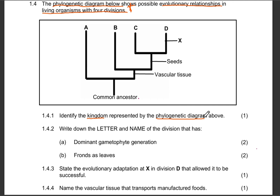The five kingdoms are: Kingdom Animalia, Kingdom Plantae, Kingdom Monera, Kingdom Fungi and Kingdom Protista. From those five kingdoms, which one is represented by the phylogenetic diagram above? It's obviously Kingdom Plantae — that's the kingdom of all our plants.